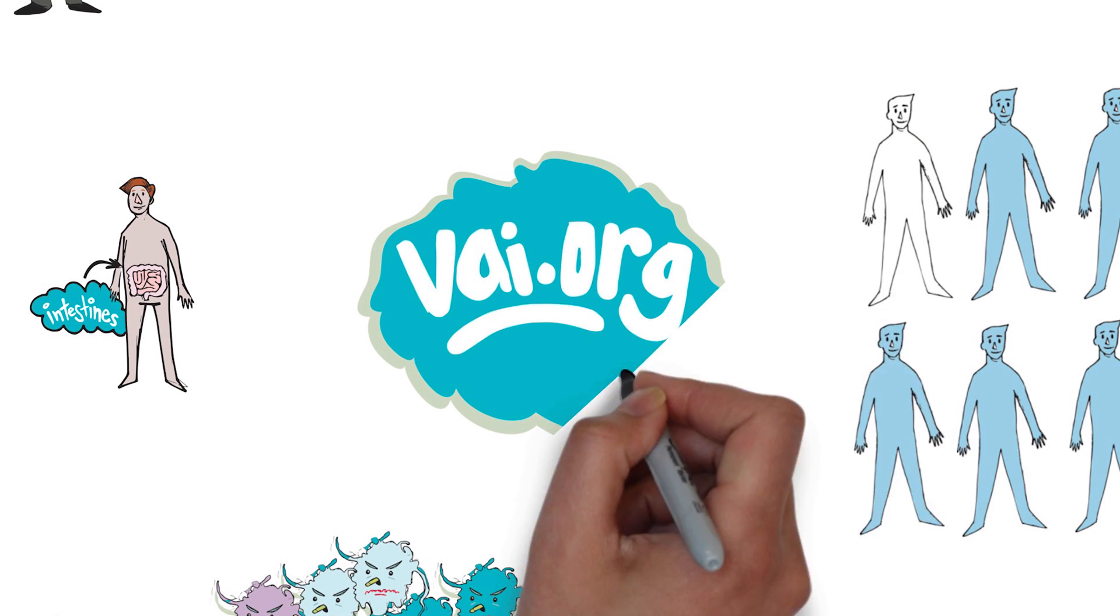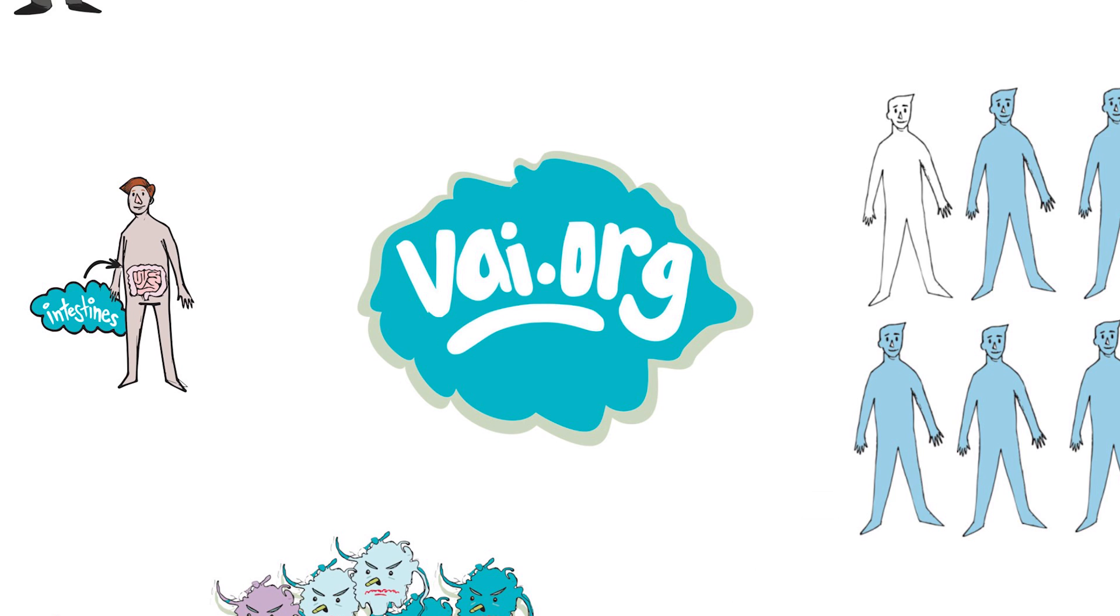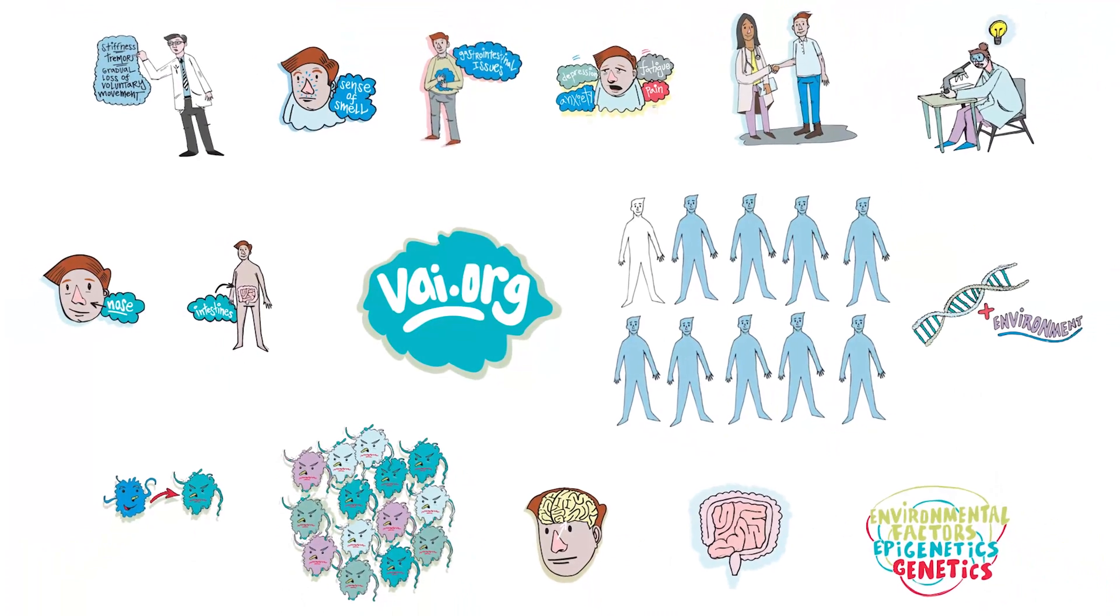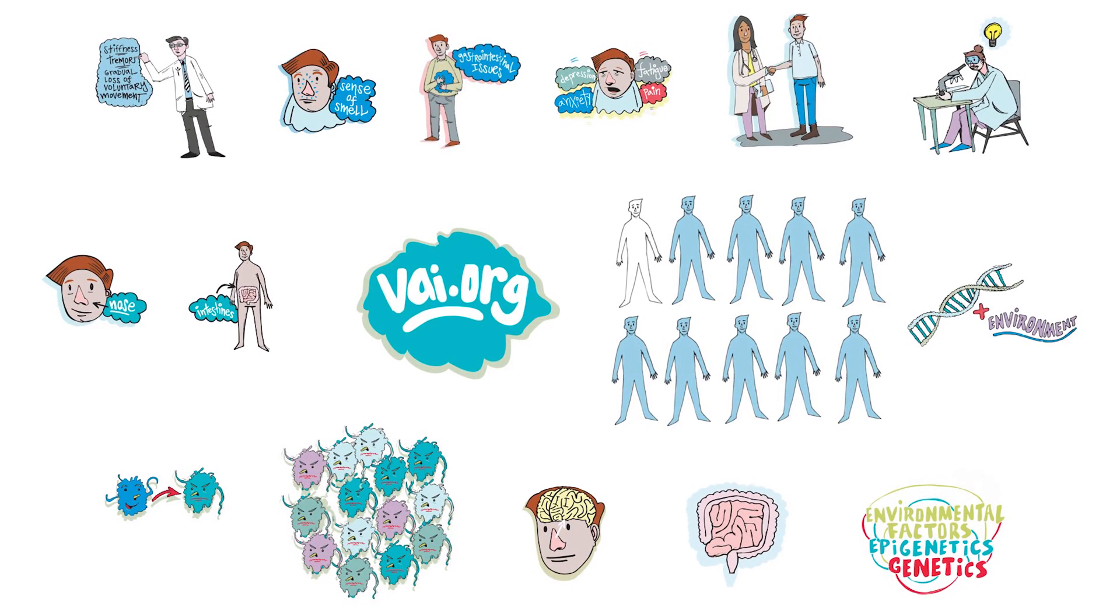The better we can understand all of these different pieces, the better we can find ways to slow or stop it and give people more healthy years. To learn more about the Parkinson's research underway at the Institute, please visit theai.org.